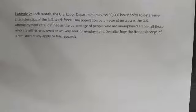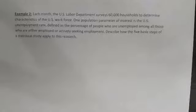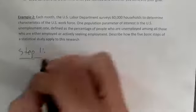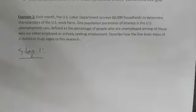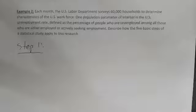Now we'll look at a study and break it down into the five steps. Each month, the U.S. Labor Department surveys 60,000 households to determine characteristics of the U.S. workforce. One population parameter of interest is the U.S. employment rate — the percentage of people who are unemployed among those either employed or actively seeking employment. Step one: the population is the U.S. workforce, and the goal is to find the unemployment rate among all Americans who are employed or seeking employment.